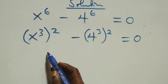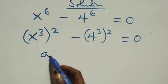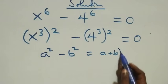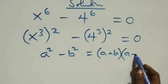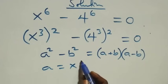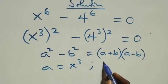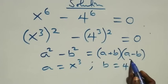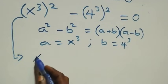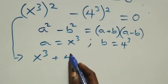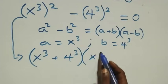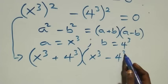This follows from the difference of two squares: a squared minus b squared is the same as (a + b)(a − b). Here, a stands as x raised to power 3 and b stands as 4 raised to power 3. So we get (x³ + 4³)(x³ − 4³) equals 0.